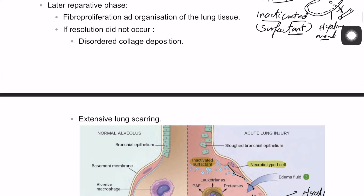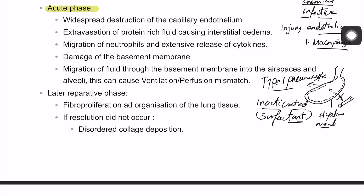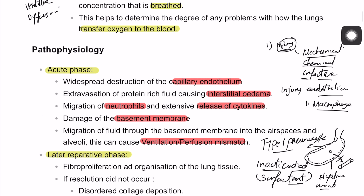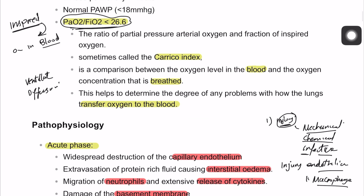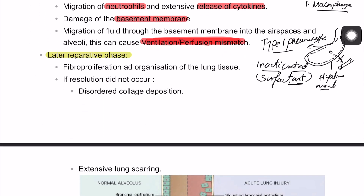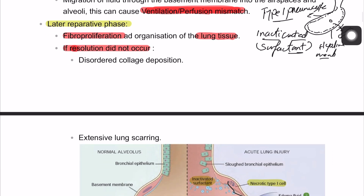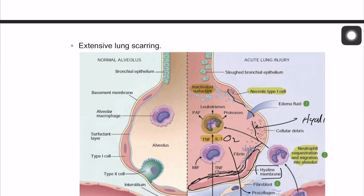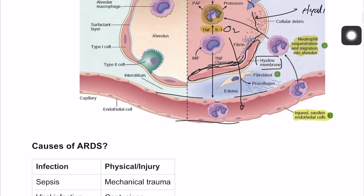We can classify the process into an acute phase and a delayed phase. In the acute phase: destruction of the capillary endothelium, interstitial edema, migration of neutrophils and cytokines such as interleukin-6, tumor necrosis factor, and interleukin-1, damage of the basement membrane of the alveoli, hyaline membrane formation, and ventilation-perfusion mismatch, which affects the PaO2/FiO2 ratio. In the later phase, if resolution does not occur, there is fibroblast proliferation, collagen deposition in the wall, leading to fibrosis.